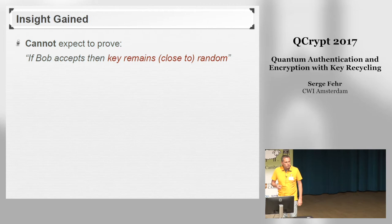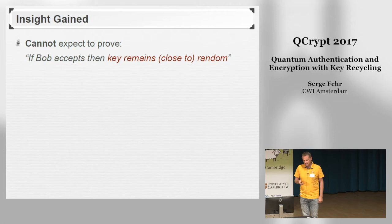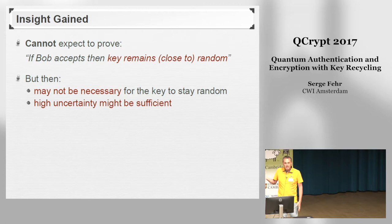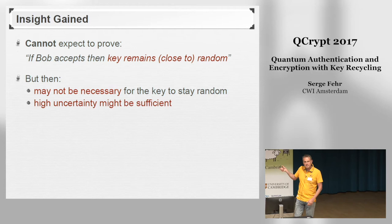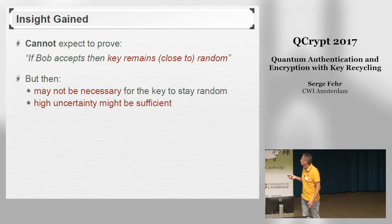This attack shows nicely what we cannot expect to formally prove. We cannot prove a statement of the form: if Bob accepts, then the key stays close to uniformly random — because we've just seen it's actually not the case. But the point is, it's not necessary for the key to stay uniformly random; it's going to be good enough for the key to have sufficient uncertainty. This insight explains why in the previous work by Damgaard et al. they didn't manage to deal with qubit-wise encoding — they were heading for a security statement of that form, and with qubit-wise encoding you can always launch this kind of attack.